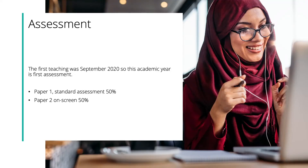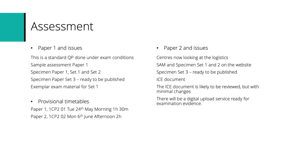By way of catch-up: this is the first year of assessment for this new qualification. Paper one is a standard assessment, 50% of the qualification, in exam-hall-type conditions. Paper two is very different — it's on screen. We have sample assessment materials for paper one, as well as specimen paper ones set one and set two, so three sets of practice papers on the website. The sample assessment material is not padlocked, so set one and set two of the specimen papers are very useful for mocks and semi-formal in-house assessments.